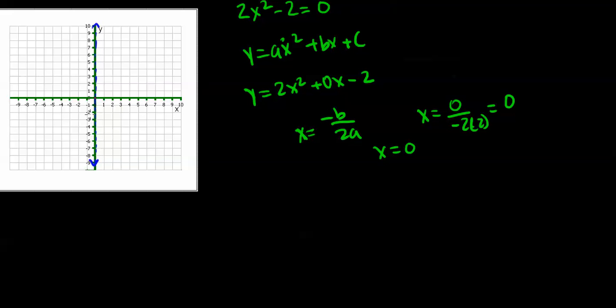Now we take the x-coordinate, which is 0, and plug it back into the original equation. So we get 2(0)² - 2. Actually, instead of putting a 0, we put a y. So we have y = 2(0)² - 2.